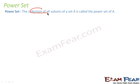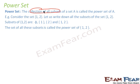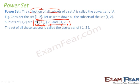Now let me introduce the term power set. A power set is the collection of all subsets of a set. For example, take set A = {1, 2}. The subsets of {1, 2} are: ∅, {1}, {2}, and {1, 2}. The whole collection — {∅, {1}, {2}, {1,2}} — is called the power set of set A.